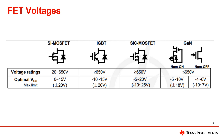Here we can see some of the differences in voltage ratings between the different FET technologies. As you can see, GaN FETs can operate up to 650 volts and have a fairly low optimal VGS. When compared to other technologies, the area where GaN excels is in high-speed applications since they can operate at high frequencies in the megahertz range.